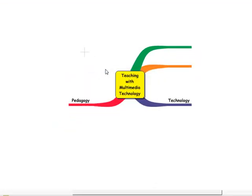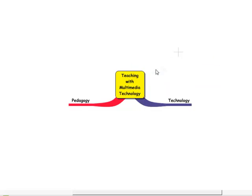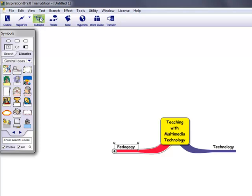So I select it. I say cut. And then the same thing for the other two. Now, under the pedagogy, we learn the cognitive learning theory and the cooperative learning. So I select the pedagogy and then I click the subtopic.